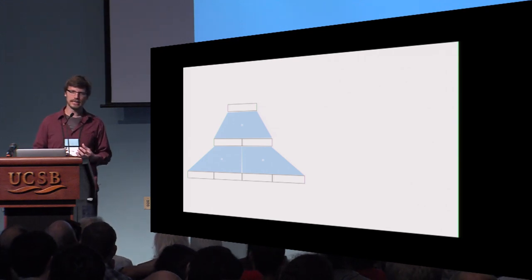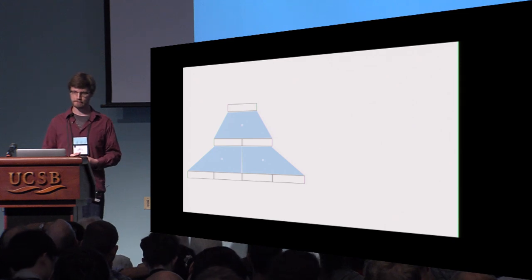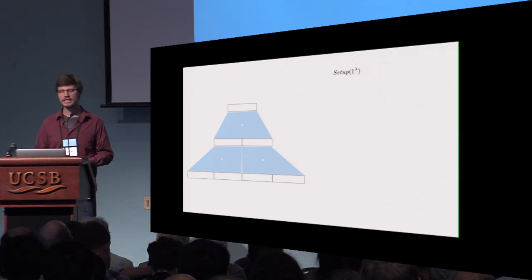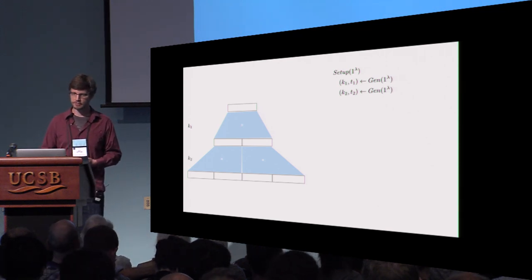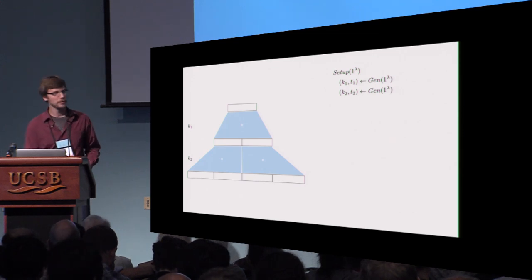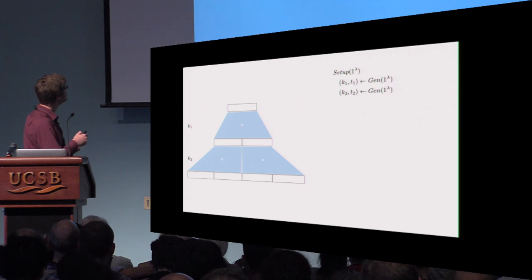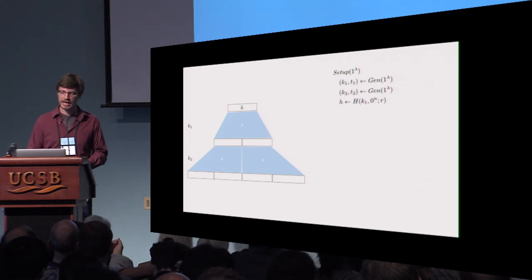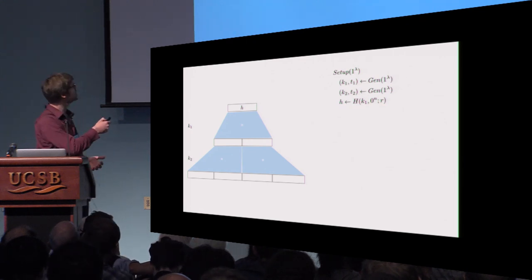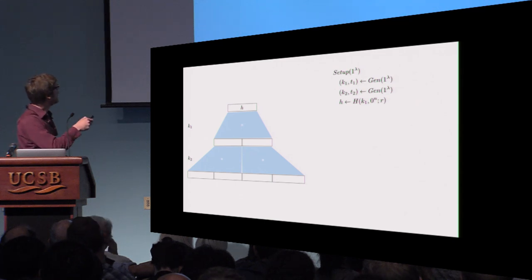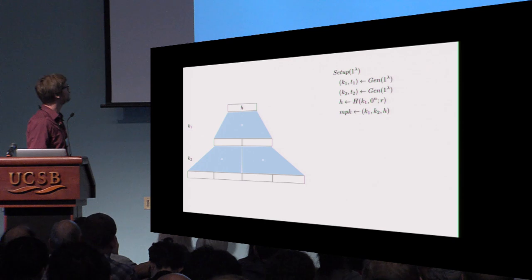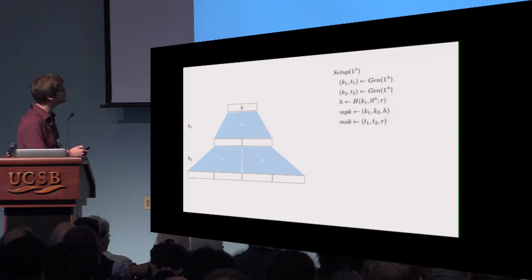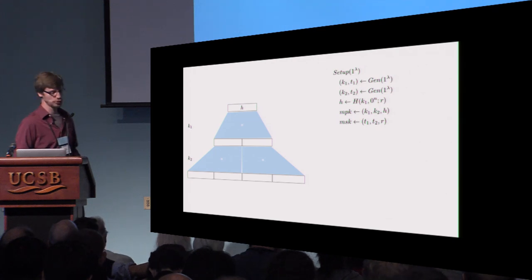The overall idea of this scheme is to arrange the keys in a binary tree. The setup algorithm first chooses two pairs of hashing keys and collision trapdoors of the chameleon encryption scheme: (K1, T1) and (K2, T2). We associate K1 with the first layer of the tree and K2 with the second layer. Then we compute a hash value H as the hash of the all-zero string, and write this hash value H into the root. H, K1, and K2 define our master public key. The master secret key is given by the collision trapdoors T1 and T2 and the randomness R used to compute this hash value.